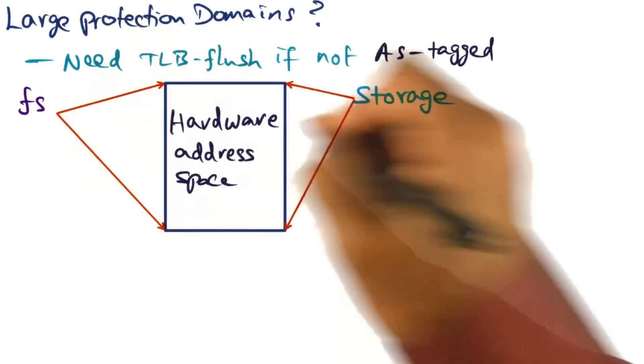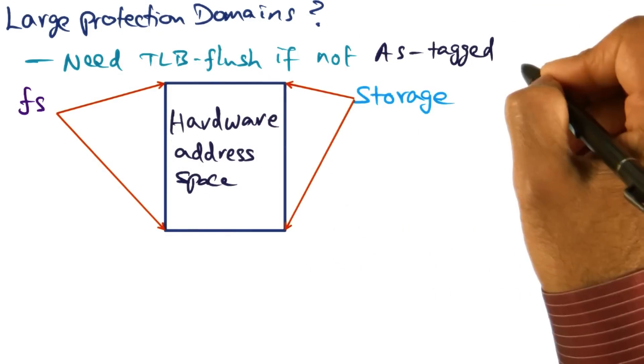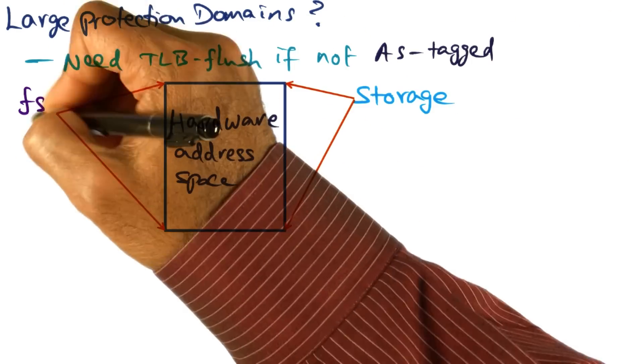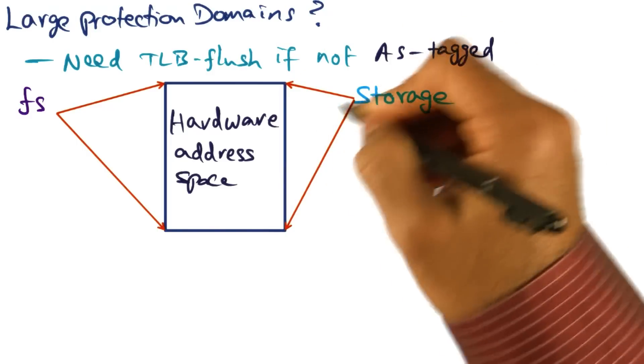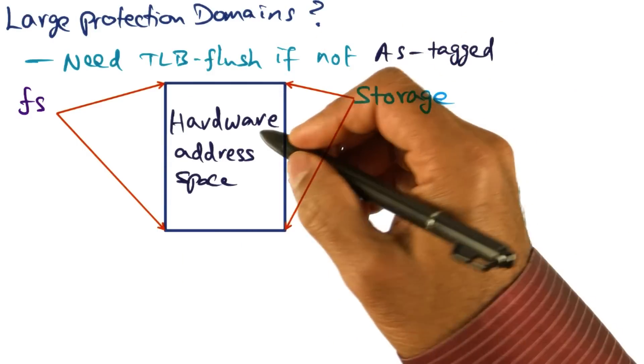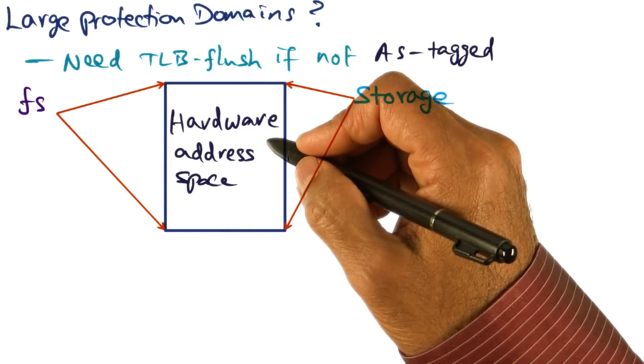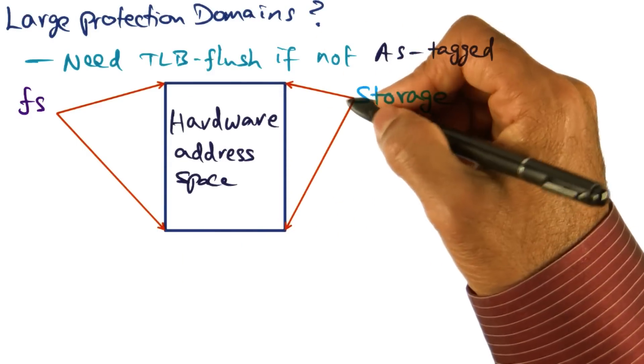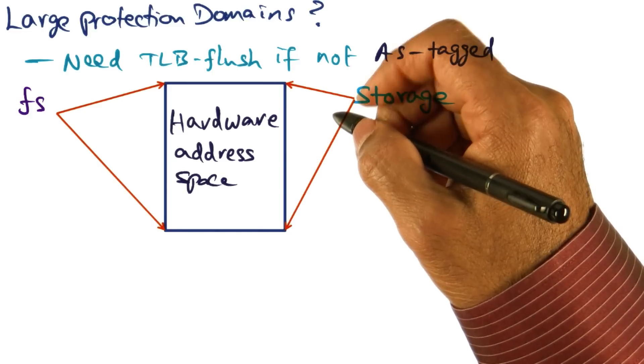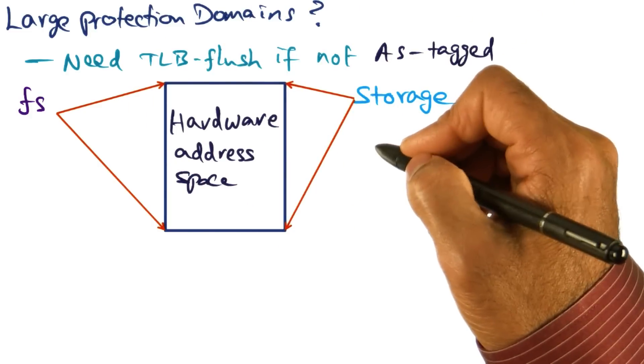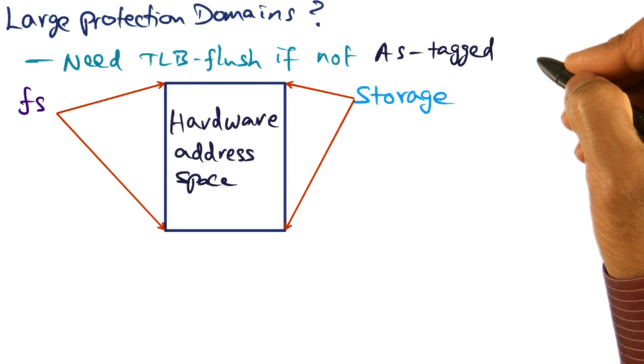If you go from this service to this service, you need to do a TLB flush because the memory footprint of each of these services is as big as the hardware address space that's available on the processor. Or in other words, the segments overlap and therefore you have to do a TLB flush when you do a context switch.